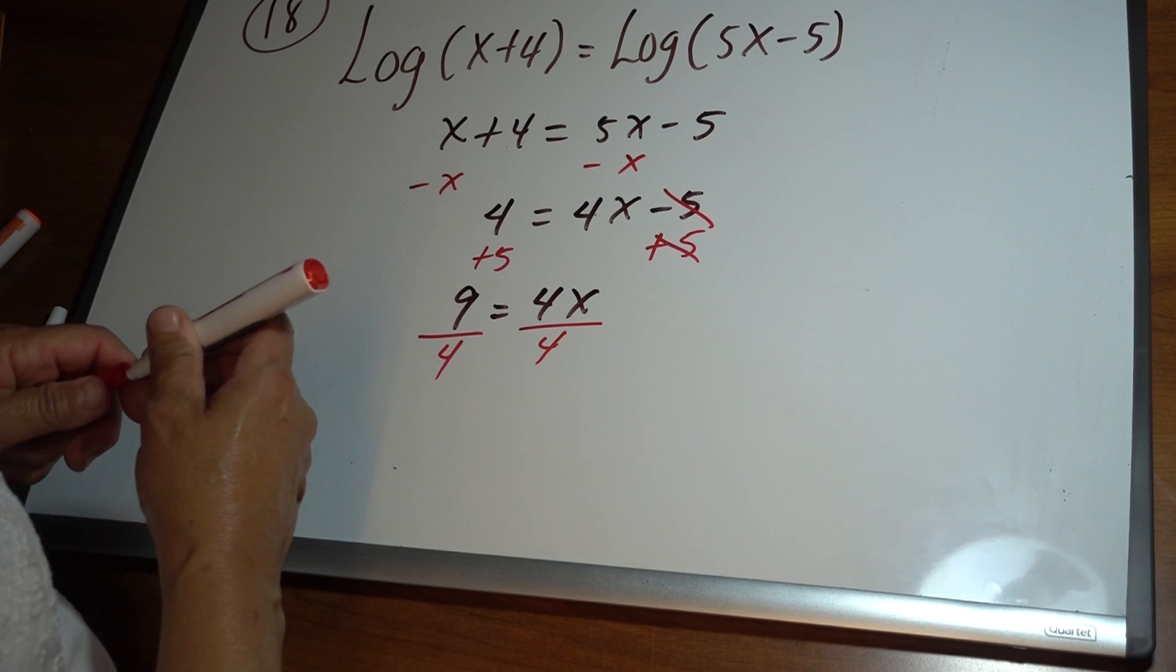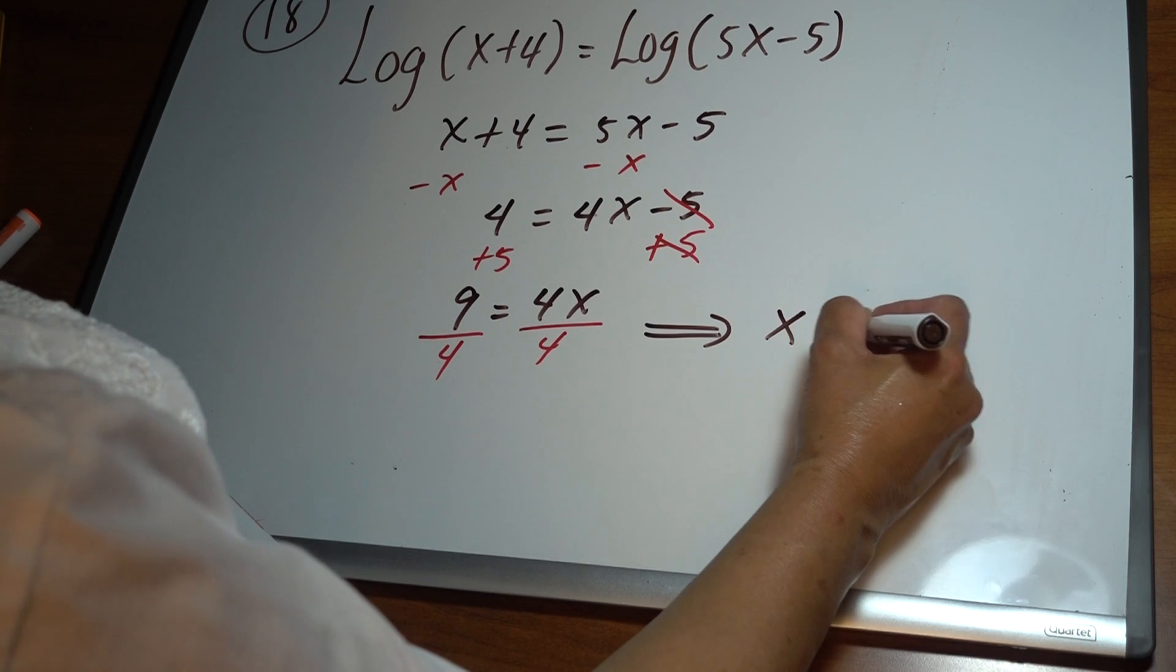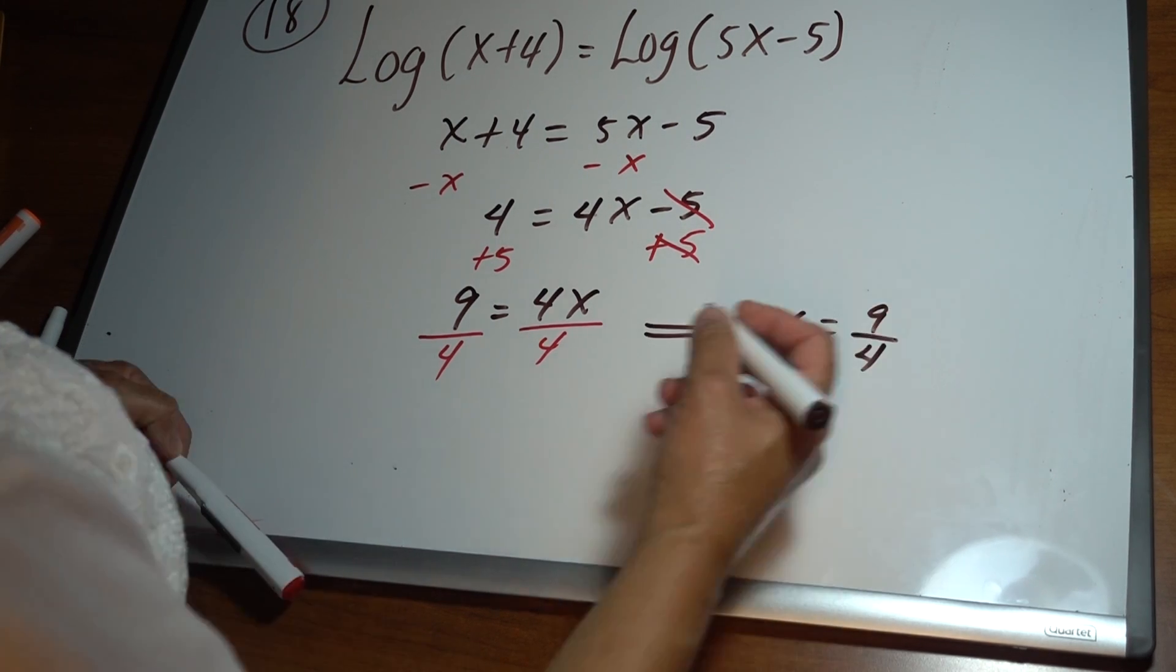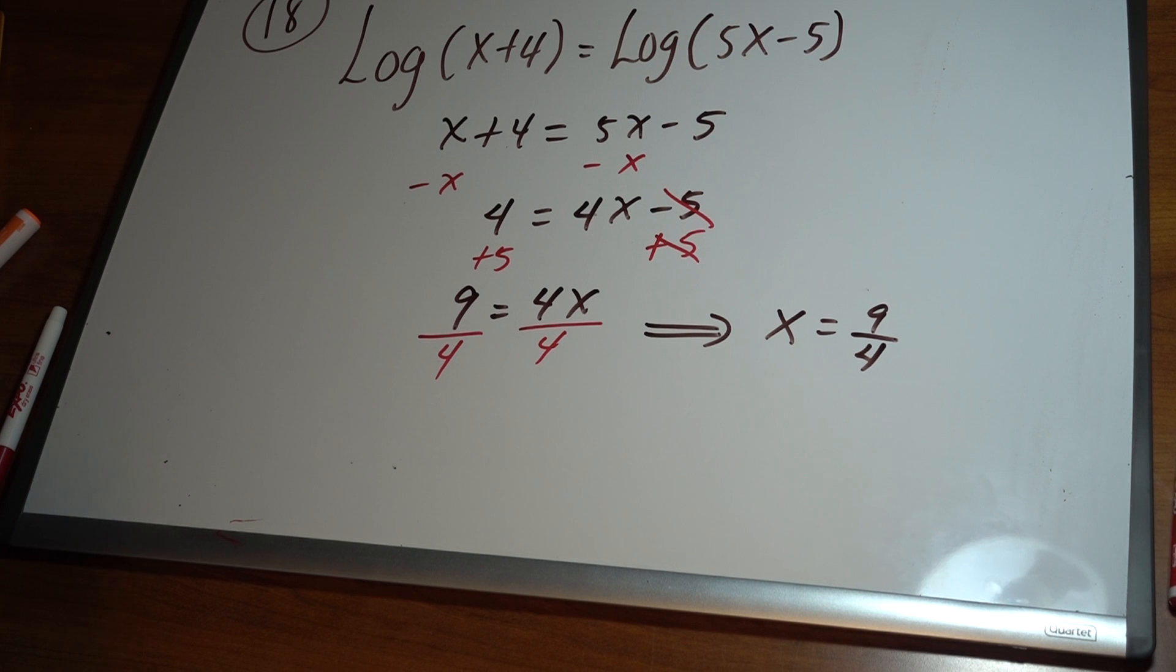So x equals 9 fourths. With logarithmic equations and exponential equations, it's important to check your answer.